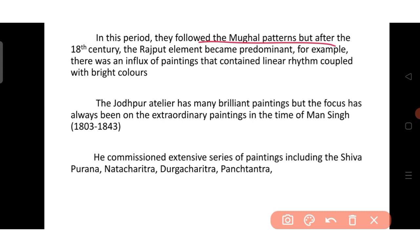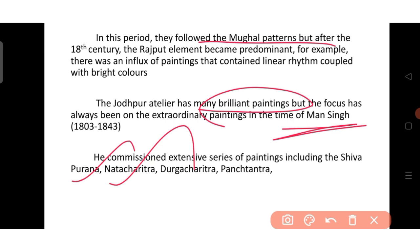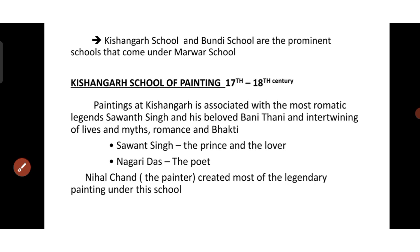There was an influx of painting containing a linear rhythm coupled with bright colours. In the Jodhpur atelier, there were many brilliant paintings, but extraordinary focus on painting was given only during the time of Man Singh, the ruler of Marwar. Man Singh commissioned an extensive series of paintings including the Shiva Purana, Natacharitra, Durga Charitra and Panchatantra.